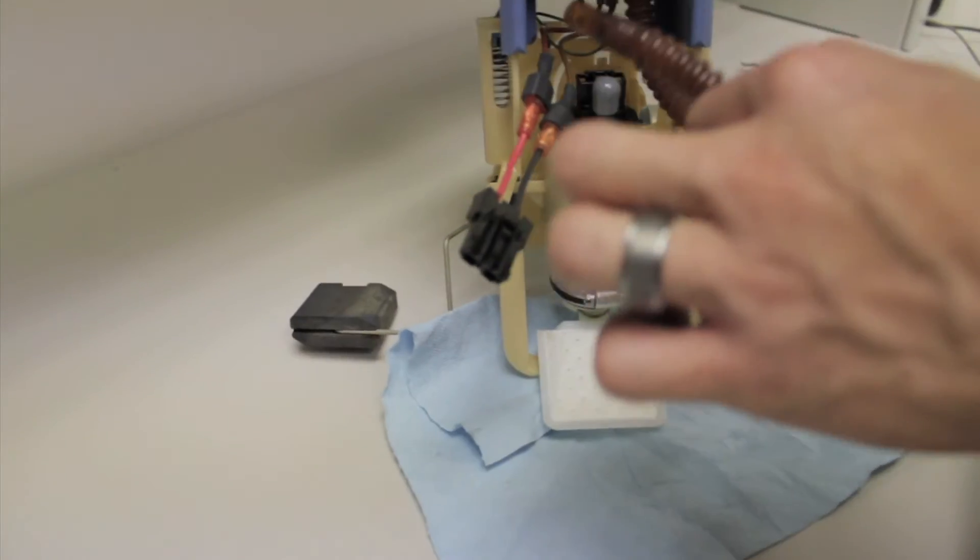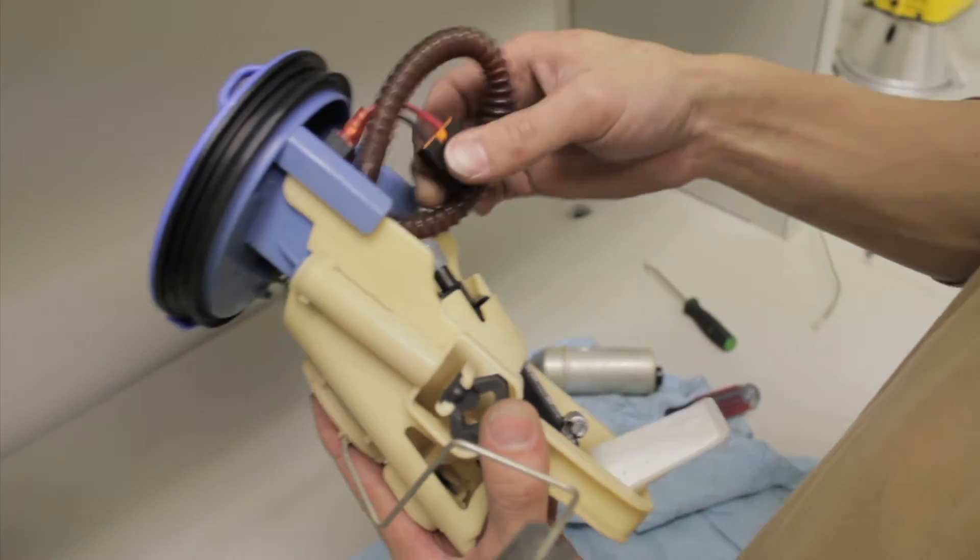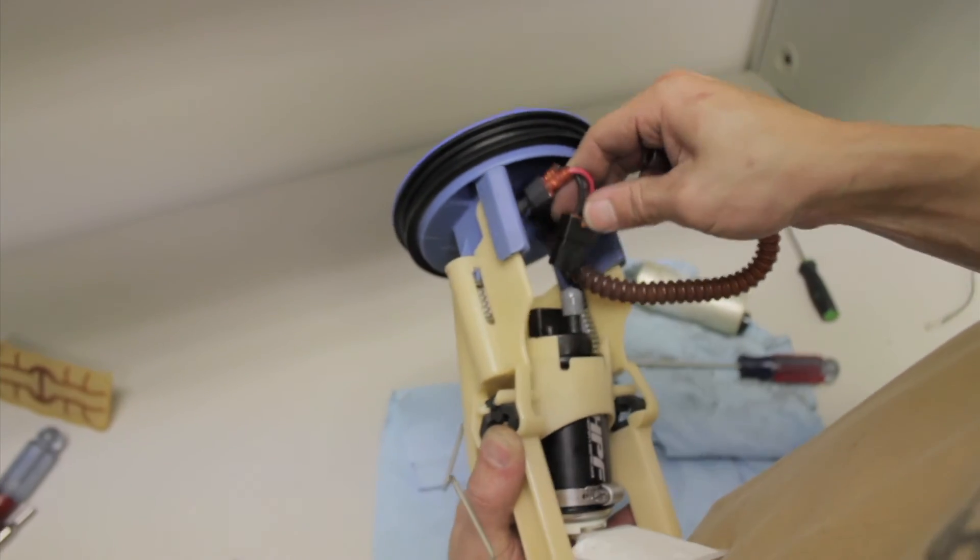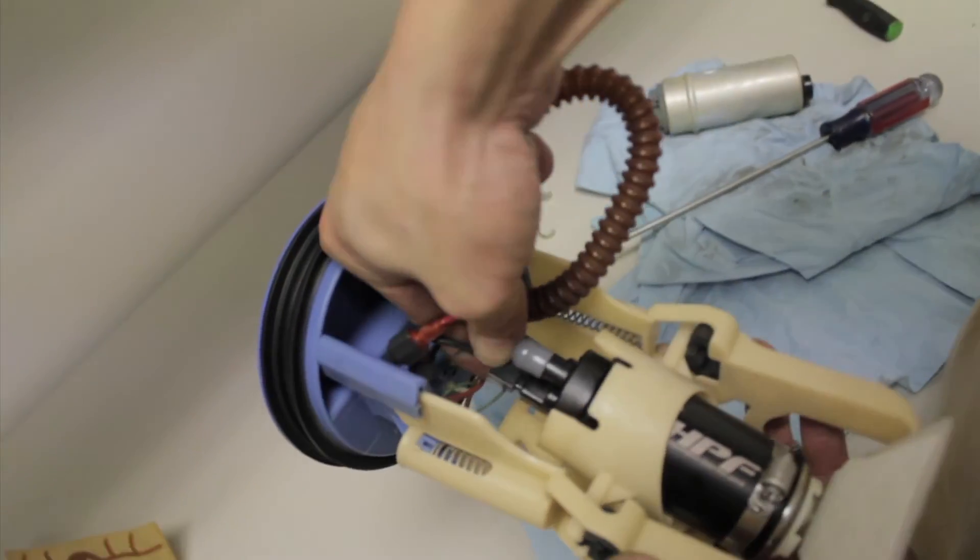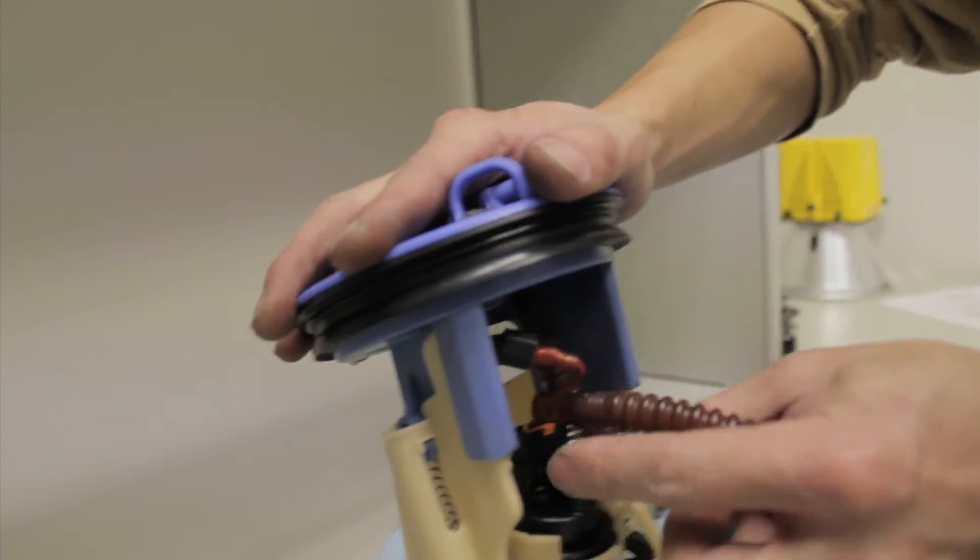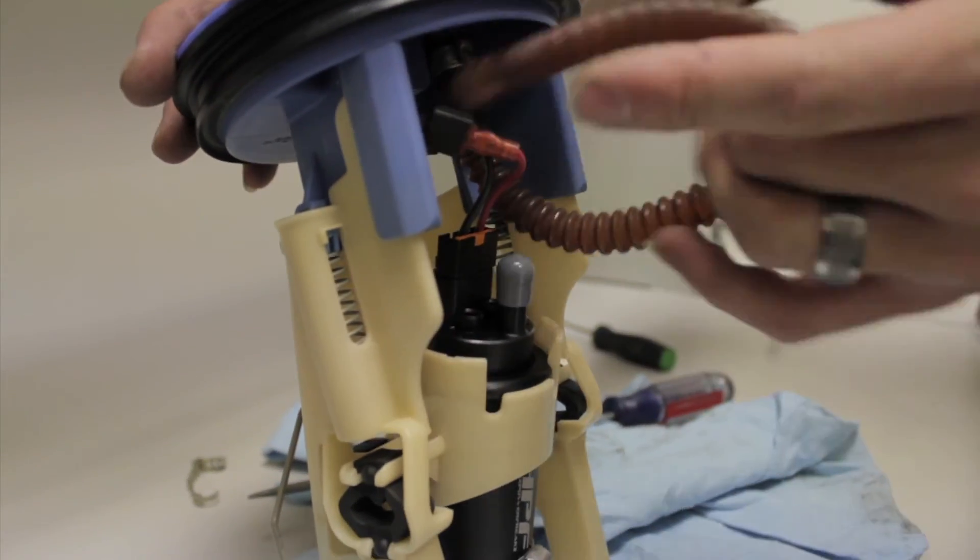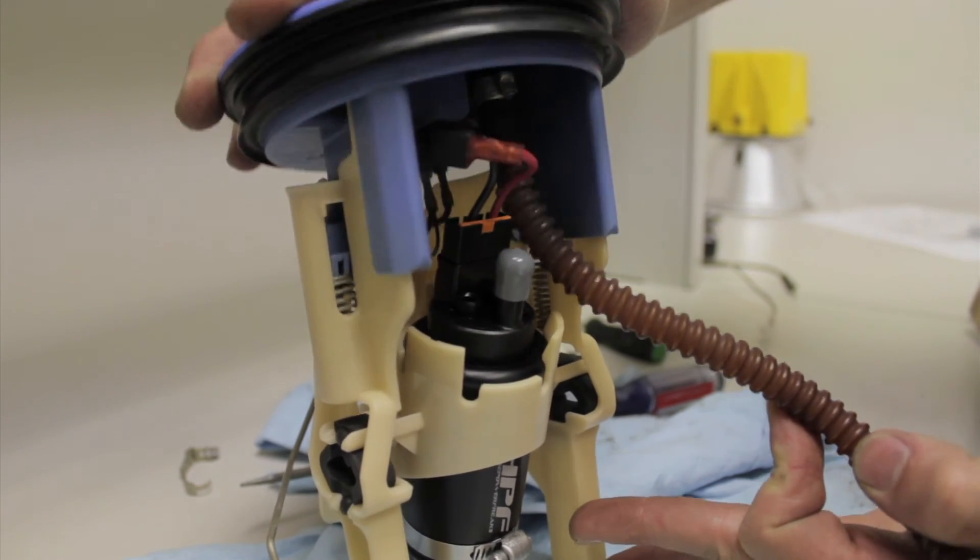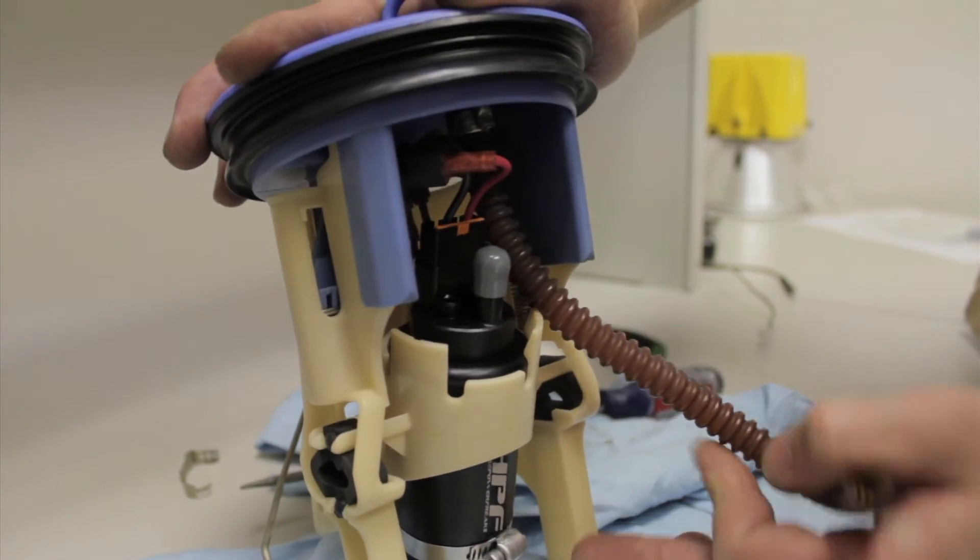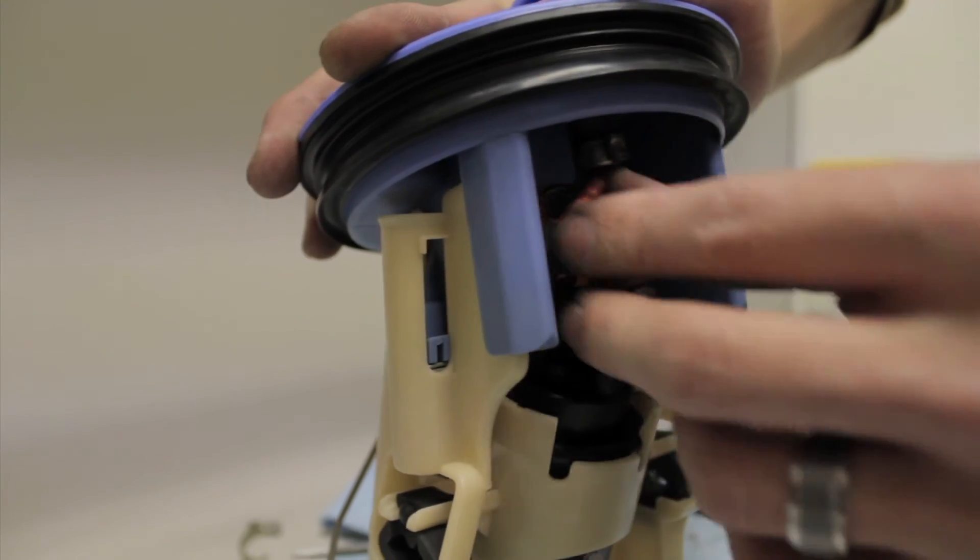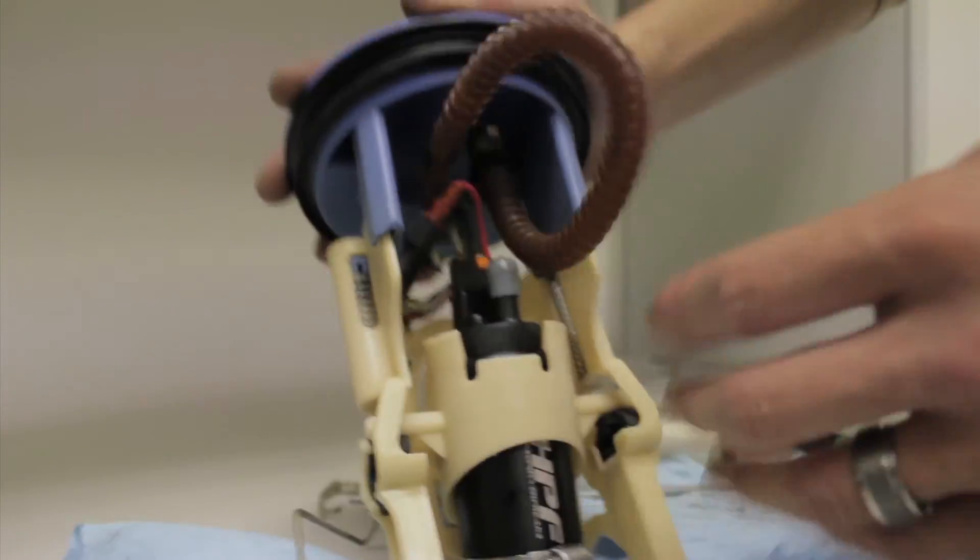So now all we have to do is reinstall the fuel feed line and plug this plug in. Plug simply installs into the top as so. What you want to do also after you plug that in is make sure that nothing binds because this is a spring loaded assembly. So as you can see, as I push down on this, it looks okay. The wiring is free.